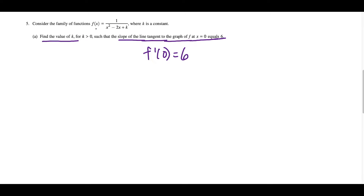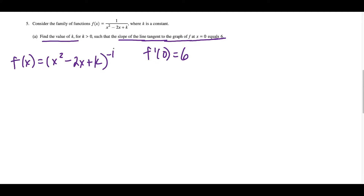We want to take the derivative of f of x so that we could use this information that we just translated. To take the derivative of f of x, it's probably a little bit easier if we get rid of this fraction and write it as x squared minus 2x plus k to the negative first power. Anytime I could avoid using quotient rule, I do. In this case, I could just do power rule and chain rule.